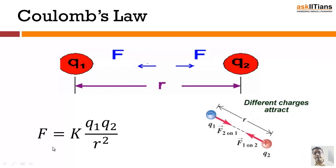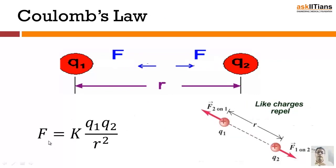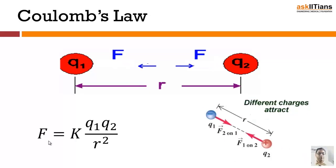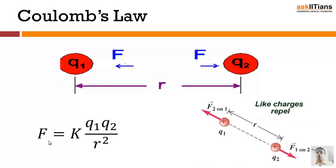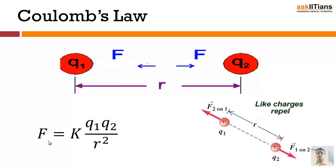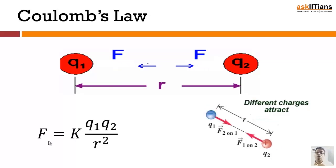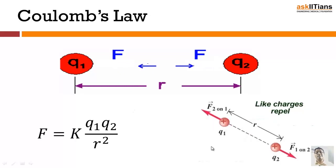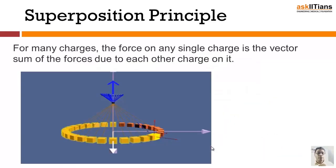This is what is defined as Coulomb's law. When you have two similar charges, they are going to repel each other. If you have opposite charges, they are going to attract each other, as you can see on the right-hand side of the screen. So opposite charges attract and same charges repel.